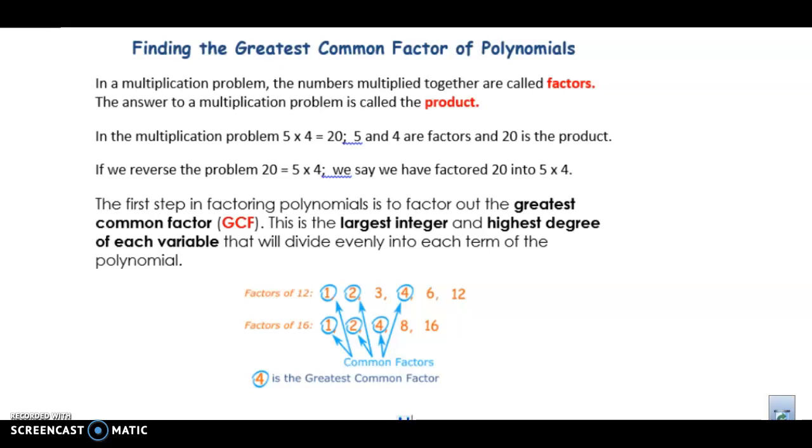The first step in factoring polynomials is to factor out the greatest common factor, and this is the largest integer and the highest degree of each variable that will divide evenly into each of the terms of the polynomial.